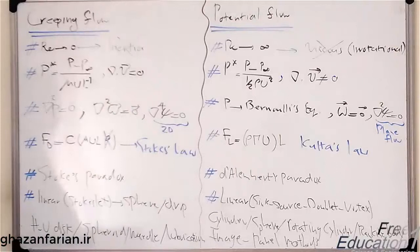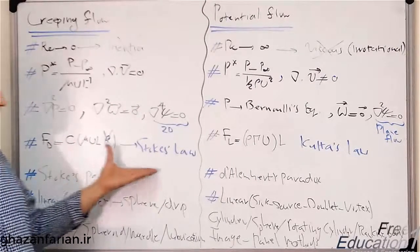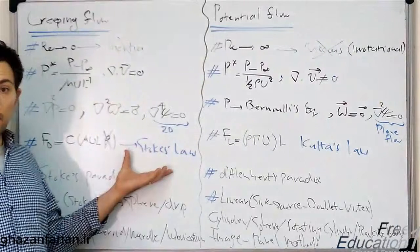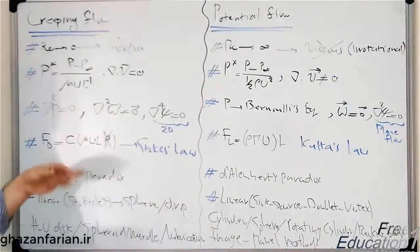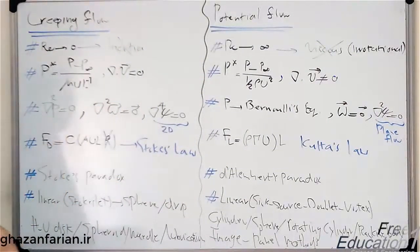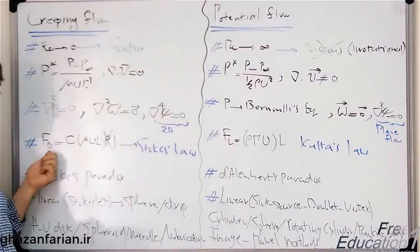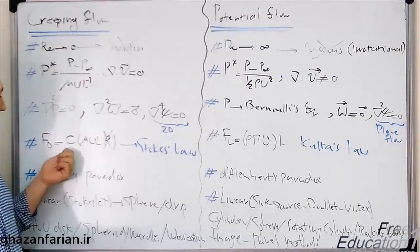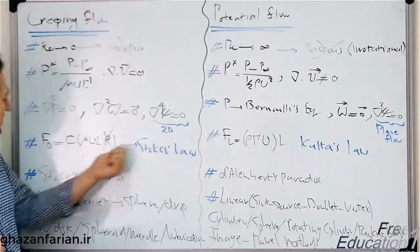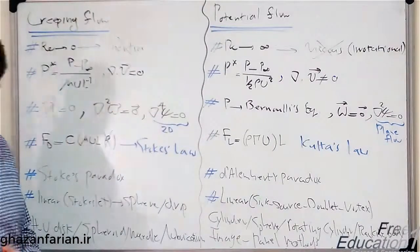This is called the Stokes law for any arbitrary shape placed inside a creeping flow. The drag force exerted on that shape is the product of a constant and three other parameters. For different geometries, just this constant changes.